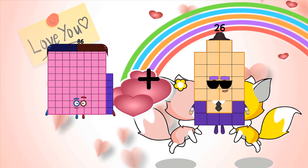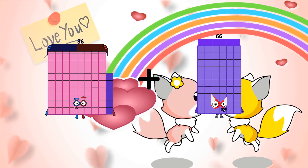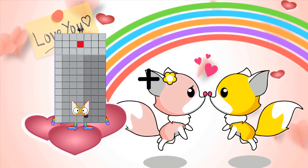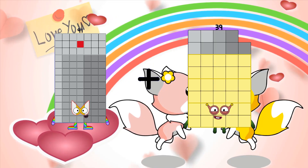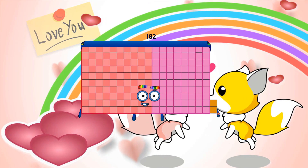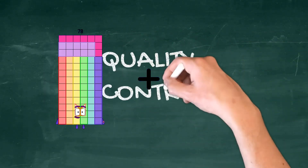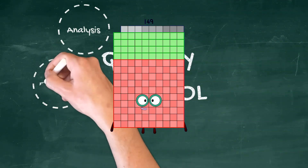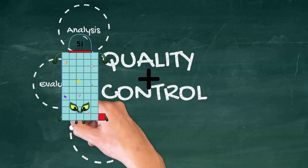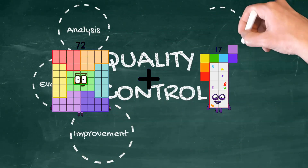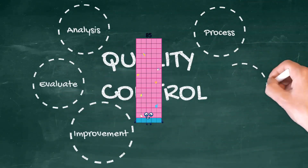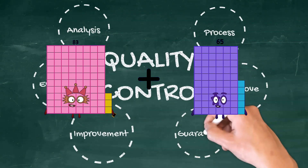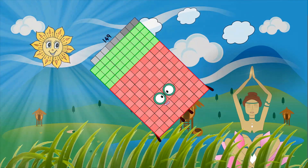Eighty-six plus sixty-six equals one-hundred-fifty-two. Ninety-one plus ninety-one equals one-hundred-fifty-nine. Fifty-nine plus ninety-one equals one-hundred-fifty-nine. Seventy-two plus thirteen equals eighty-five. Eighty-three plus sixty-six equals one-hundred-fifty-nine.